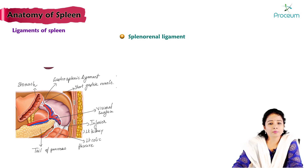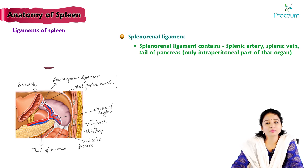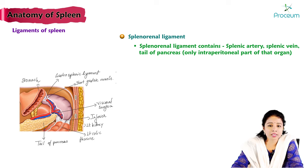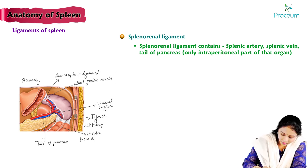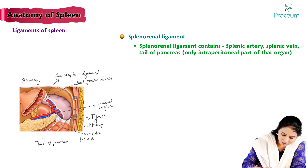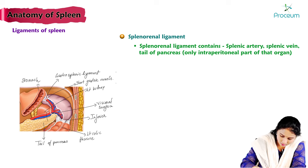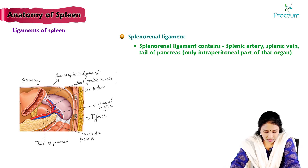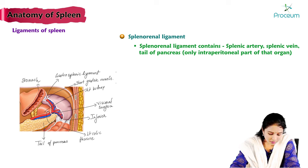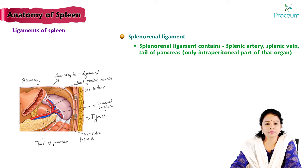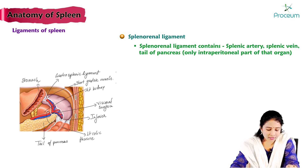The splenorenal ligament, also called the lienorenal ligament, contains the splenic artery, splenic vein, and tail of the pancreas. We can see the tail of the pancreas ending near the hilum, along with the splenic artery and splenic vein, which are the contents of the splenorenal ligament. The only intraperitoneal part of the pancreas is located within this ligament.